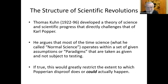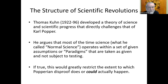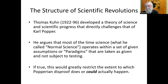Thomas Kuhn developed a theory of science and scientific progress that directly challenges Popper's. He argues that most of the time, science — what he calls normal science — operates within a set of given assumptions or paradigms that are taken as given and not subject to testing. If true, this would greatly restrict the extent to which Popperian disproof could arise. The paradigm sets up what the questions are, what an adequate answer would look like, and what explanatory resources can be drawn upon.